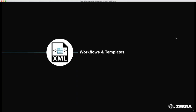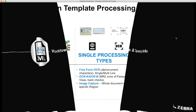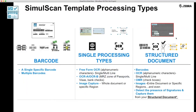Let's start with the different processing types to understand how to create your template. SimulScan can be broken down into three main categories. We have barcode processing solutions — single or multi-barcode. We have single processing types such as free-form OCR, reading the MRZ zone of passports, or capturing an image with your imager or camera based on a barcode. We also have document processing solutions for structured documents to extract printed text, identify checked checkboxes, capture images, decode barcodes, and detect if a signature is present in a defined region.